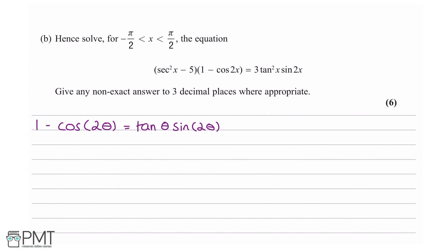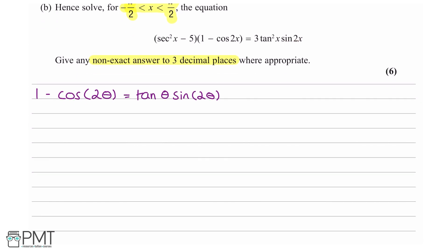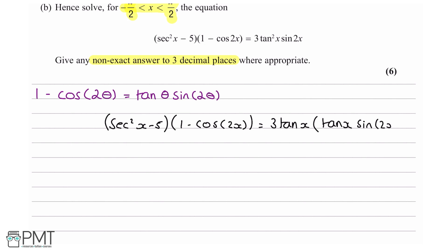First, I'm going to highlight the domain over which x is valid, and also that we need to give any non-exact answers to three decimal places. We need to look at the equation and manipulate it using the identity from part A. I'm going to take tan²x sin2x and split it as tanx times (tanx sin2x), so: sec²x minus 5(1 minus cos2x) equals 3 tanx times (tanx sin2x).